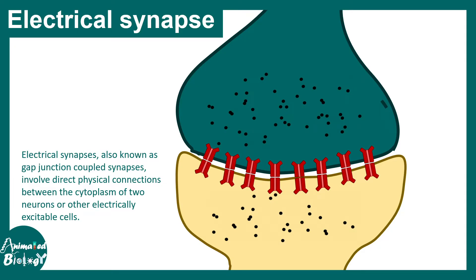Here you can see the presynapse in green and postsynapse in yellow, and all these red channels are known as connexons, which connect the pre and post synapse. It actually forms a tunnel through which neurotransmitters can flow from the pre to the post synapse. Not only neurotransmitters, but also metabolites, ATP, etc., can be transported through these channels.